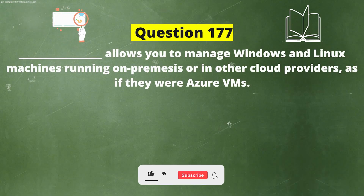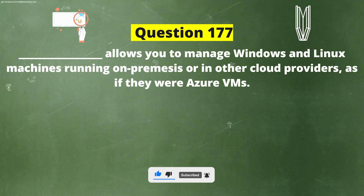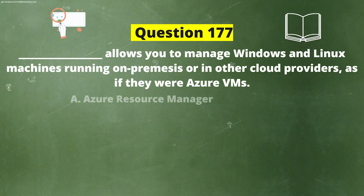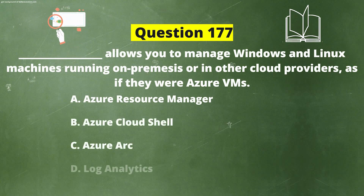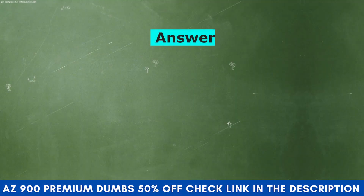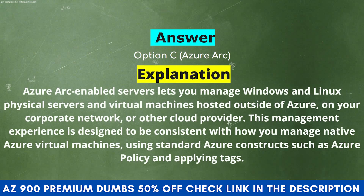Fill in the blank: Dash allows you to manage Windows and Linux machines running on-premises or in other cloud providers, as if they were Azure VMs. Option A: Azure Resource Manager. Option B: Azure Cloud Shell. Option C: Azure Arc. Option D: Log Analytics. The correct answer is Option C, Azure Arc. Azure Arc enabled servers lets you manage Windows and Linux physical servers and virtual machines hosted outside of Azure, on your corporate network or other cloud provider, using standard Azure constructs such as Azure Policy and applying tags.